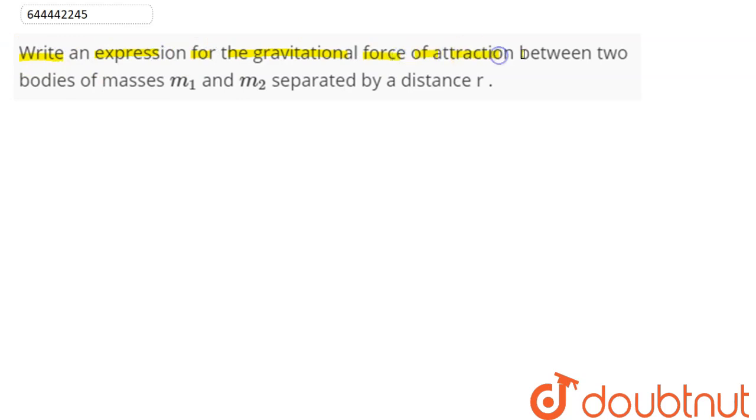So in the question it is said that there are two bodies of masses m₁ and m₂ separated by a distance given to be r.